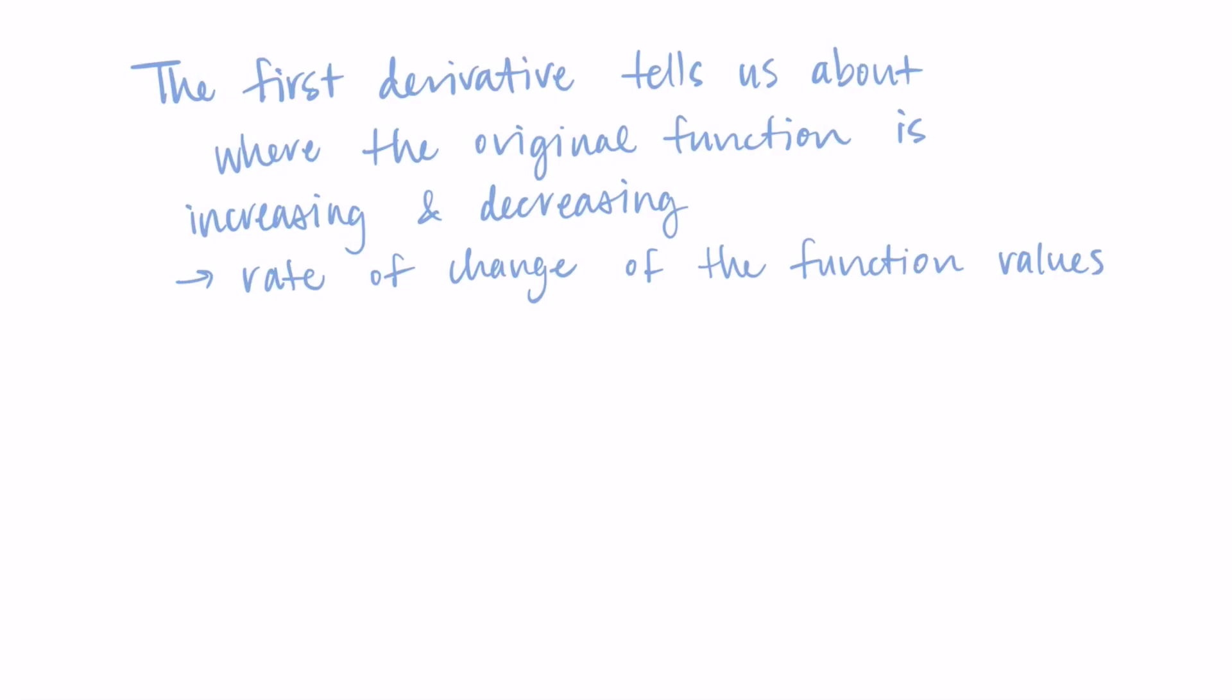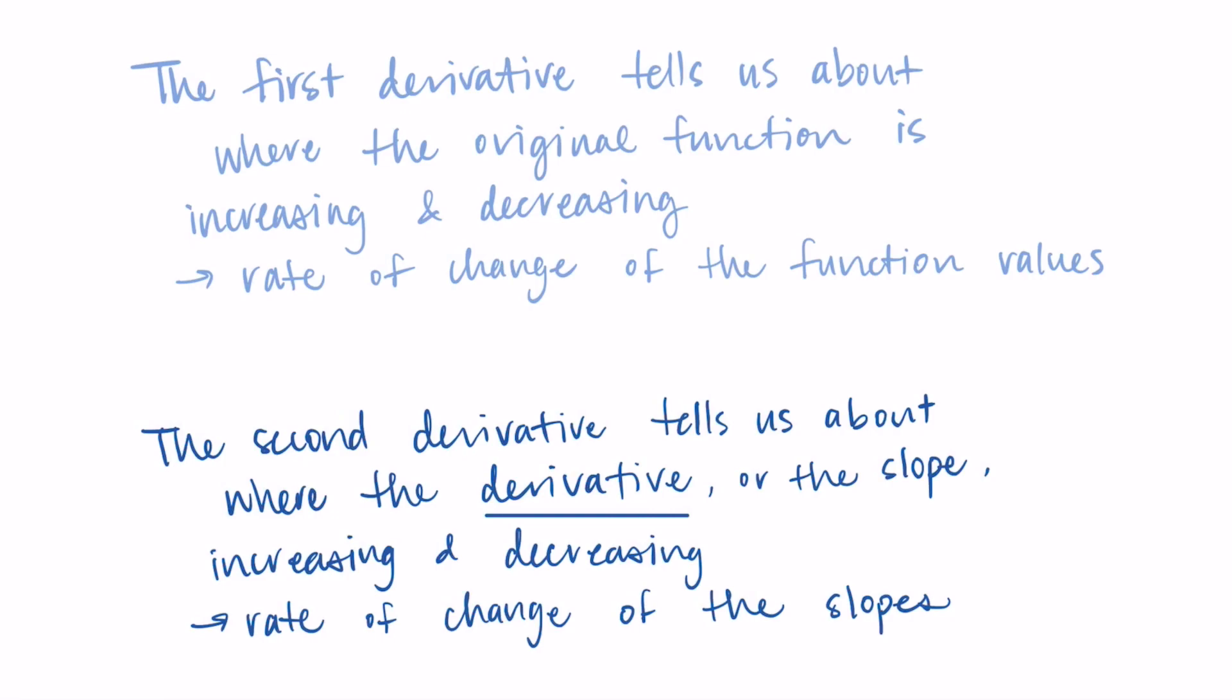Now we have the second derivative. The second derivative does the same thing except it's being applied to the derivative rather than the original function. So the second derivative will tell us about where the derivative function, which represents the slope, is increasing or decreasing. The second derivative tells us the rate of change of the slopes of the function.